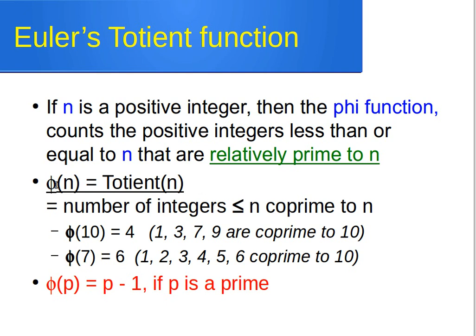It is usually written as phi(n). The phi function, or Totient of n, is the number of integers less than or equal to n and co-prime to n. Remember: two numbers are co-prime if their GCD — the greatest common divisor — equals 1.